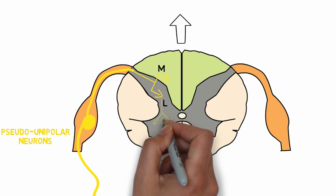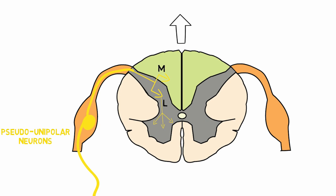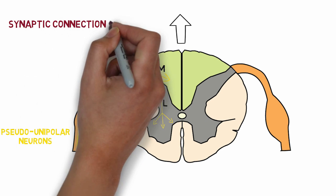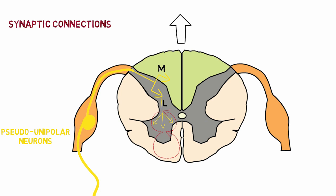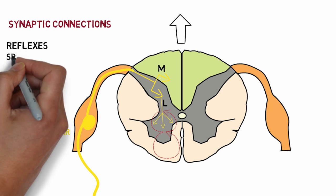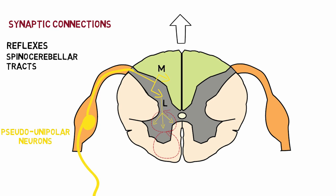The lateral branch forms multiple synaptic connections in the intermediate as well as the anterior portions of the spinal cord. These synaptic connections are very important as they help in formation of local reflex pathways. Some of these fibers also relay into the spinocerebellar tracts, and some fibers ascend upwards in the dorsal column pathway.